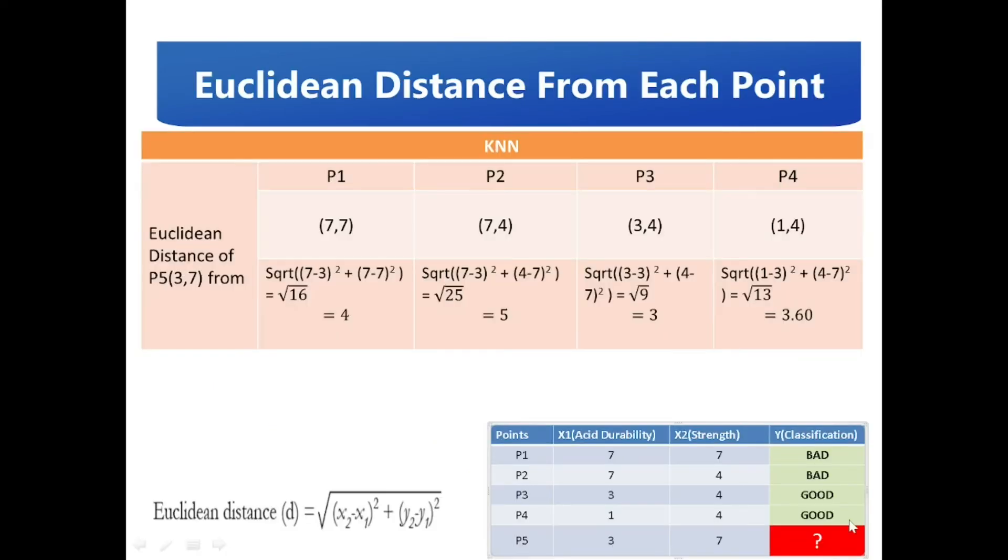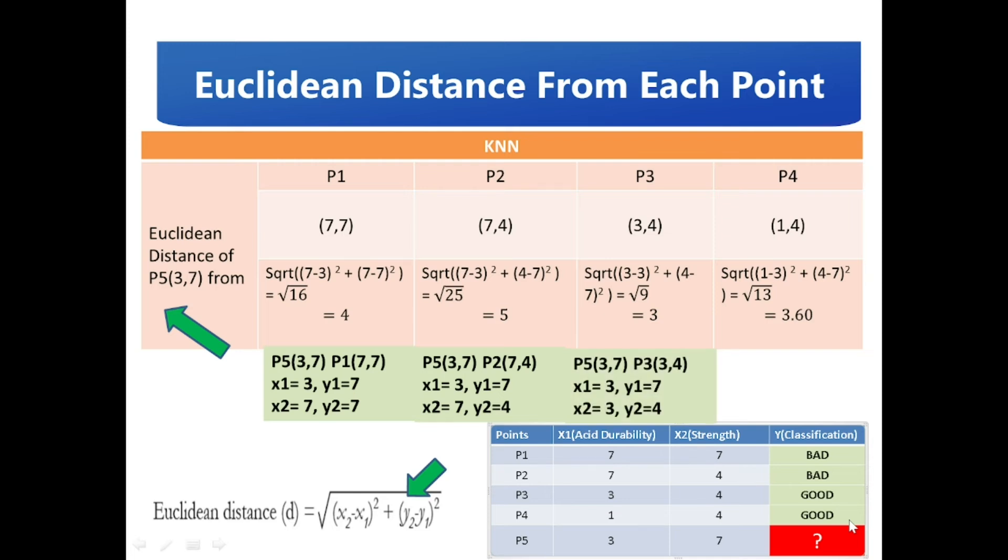Here the objective is to calculate the distance for each point P1 to P4 in reference with point P5 by applying the Euclidean distance formula. For instance, for P5 (3, 7) with point P1 (7, 7), the value of x1 is 3 and y1 is 7, and x2 is 7 and y2 is 7. The calculated distance using the formula is 4. Similarly for point P5 with P2, P3, and P4, we derived Euclidean distances of 4, 5, 3, and 3.60.